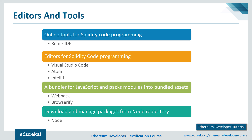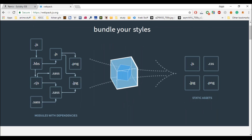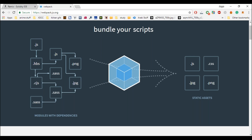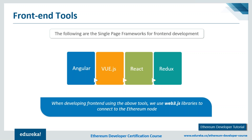For bundlers written in JavaScript that help bundle modules, the two most popular are Webpack and Browserify. With Webpack you can bundle your assets, images, scripts, and styles. Browserify allows you to write Node.js-style modules that compile for use in the browser — you write modules in separate files exporting external methods and properties. You also need Node.js downloaded and installed to manage packages from the Node repository.